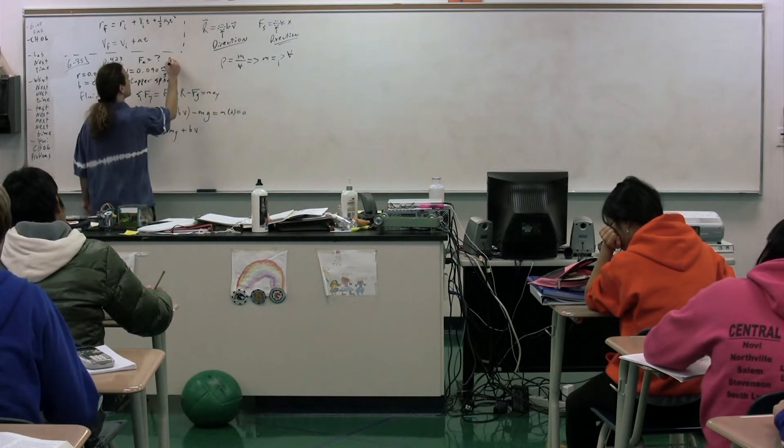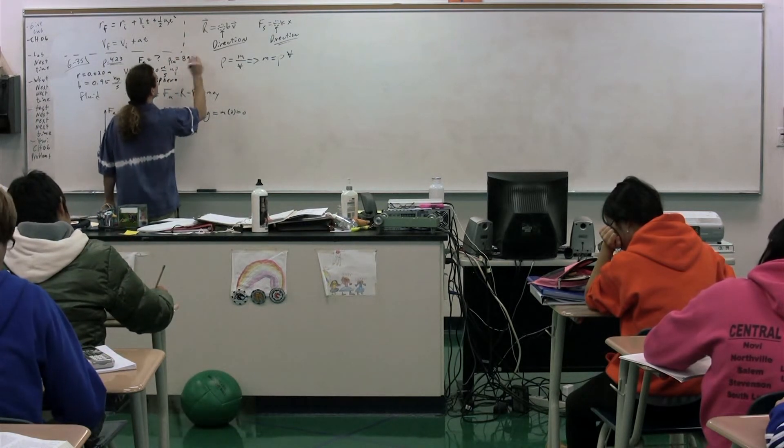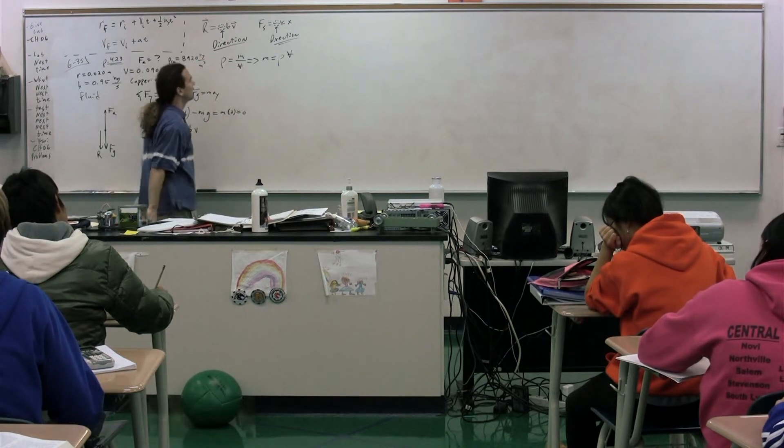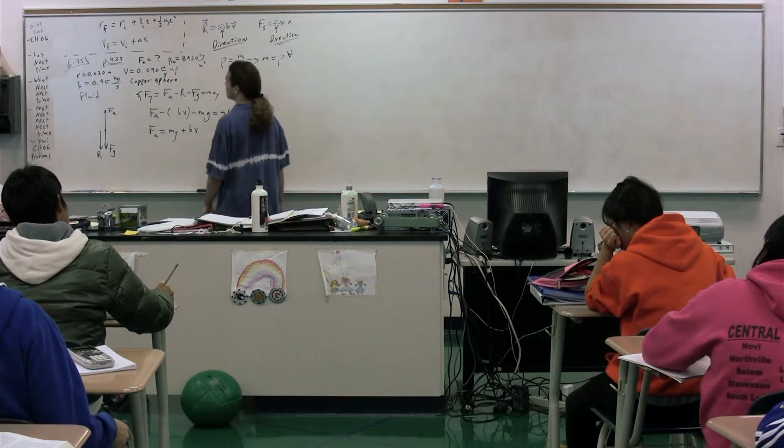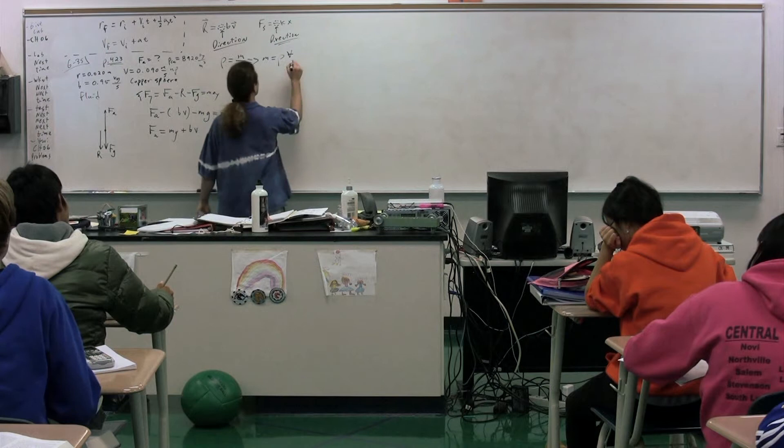The density of copper is? 8,920 kilograms per meter cubed. Okay. We're close. I see the density. What about the volume? Volume is 4 thirds pi r cubed. Because it's a sphere.